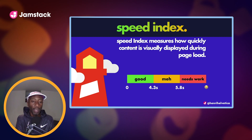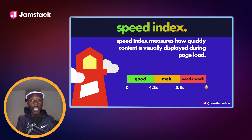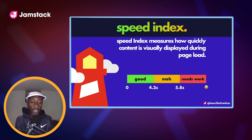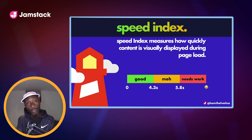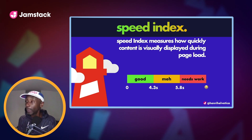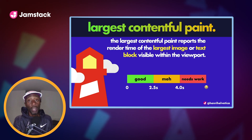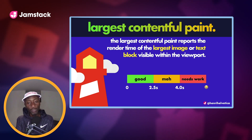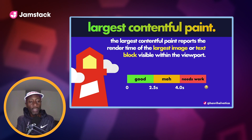The Speed Index is the next metric and one of my favorites. It measures how quickly content is visually displayed during a page load. You can see the timings for what's good, what's so-so, and what needs work. This is something I'd love for you to take a closer look at because it's a really good metric.